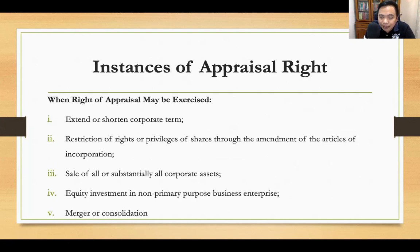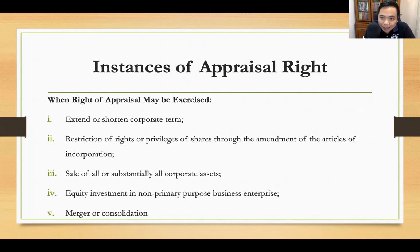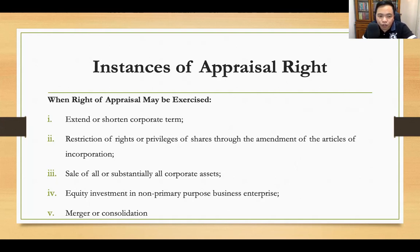For example, if the corporate term has been extended or shortened — for example, the corporation is good for 50 years but is suddenly reduced to 25 years — the stockholders can pull out their investment from the corporation. Or if under the articles of incorporation, ABC Corporation is to exist only for 10 years, the stockholders had made their investment with that term in mind; if the corporate term is extended, stockholders can also pull out their investment by exercising their appraisal right. Other instances include: restrictions of rights and privileges of shares through amendment of the articles of incorporation, sale of all or substantially all corporate assets, equity investment in non-primary purpose business enterprise, and lastly, merger or consolidation.